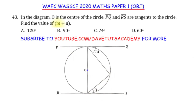So now we have to find the value of M plus N. There are quite a number of ways you can go ahead to try and solve this. For example, the angle between the tangent and the radius of a particular circle is going to be 90 degrees.